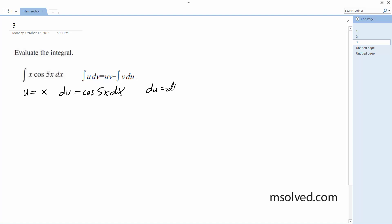du is equal to dx, and then v is going to be equal to 1/5 sine of 5x.